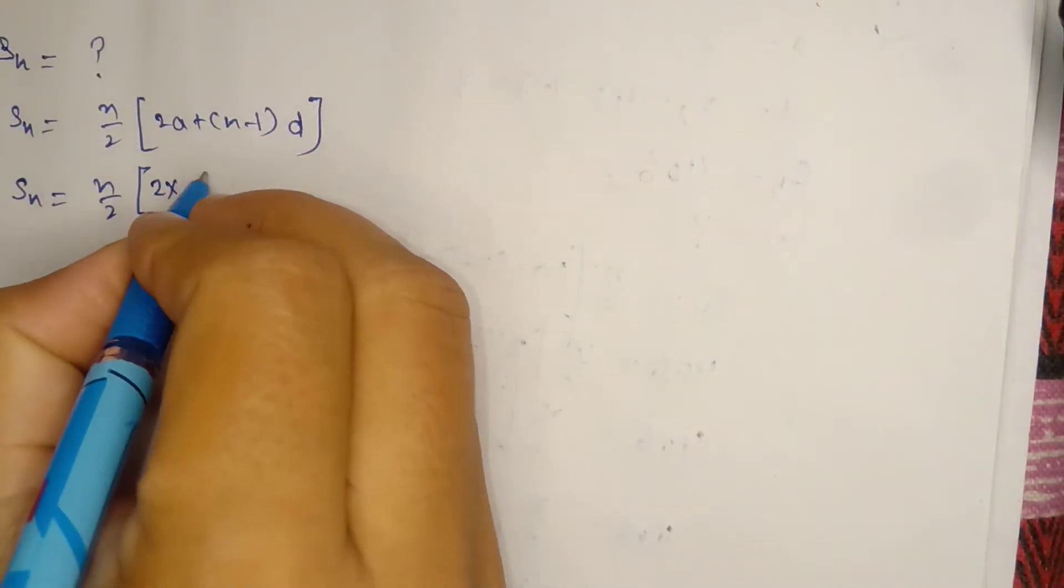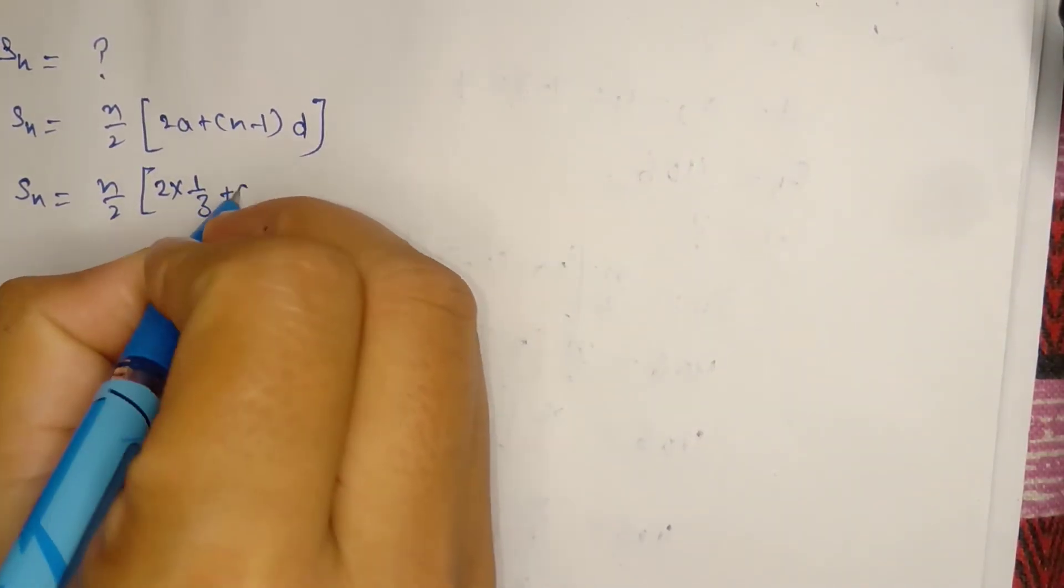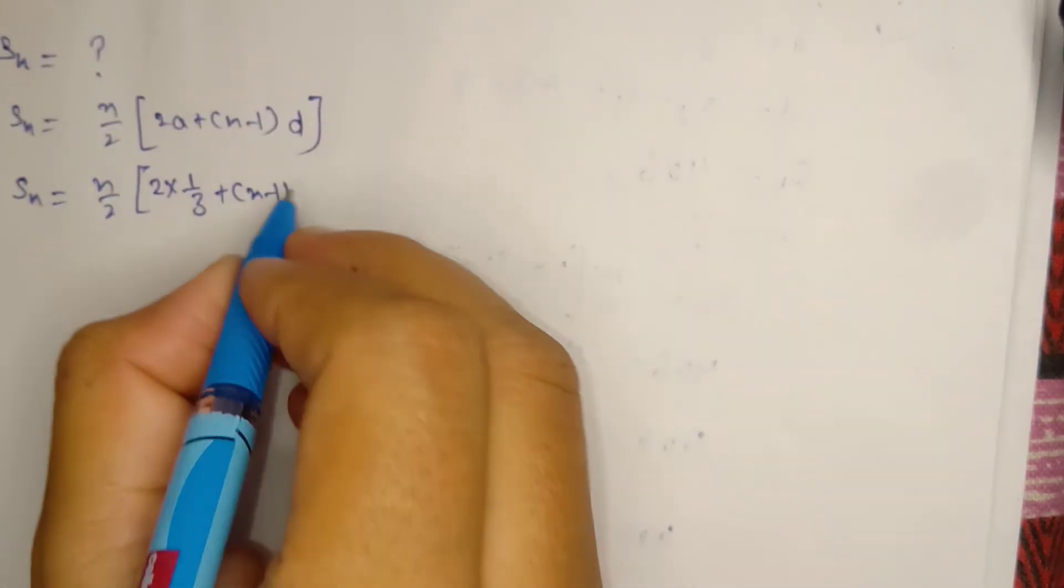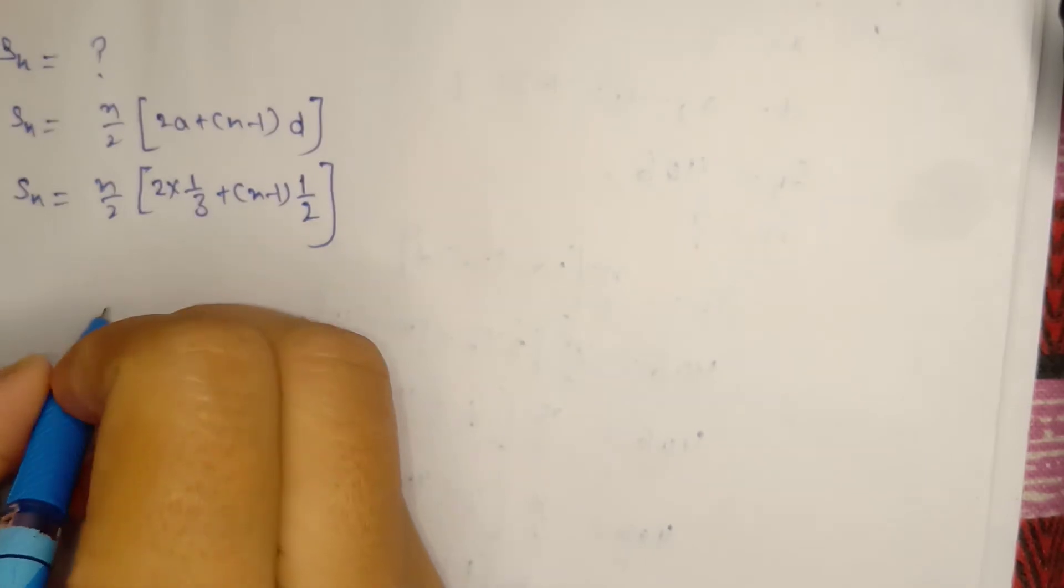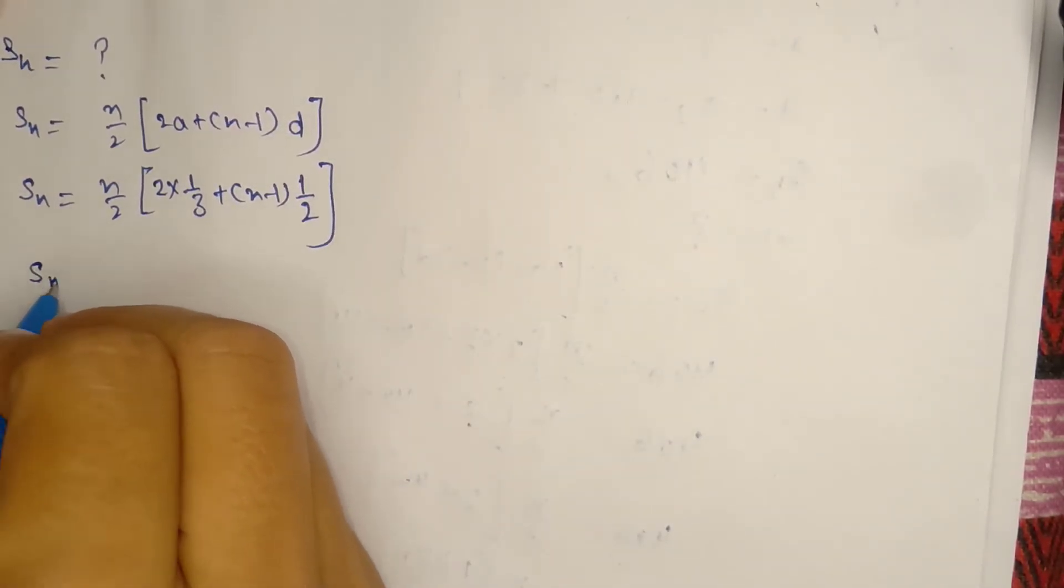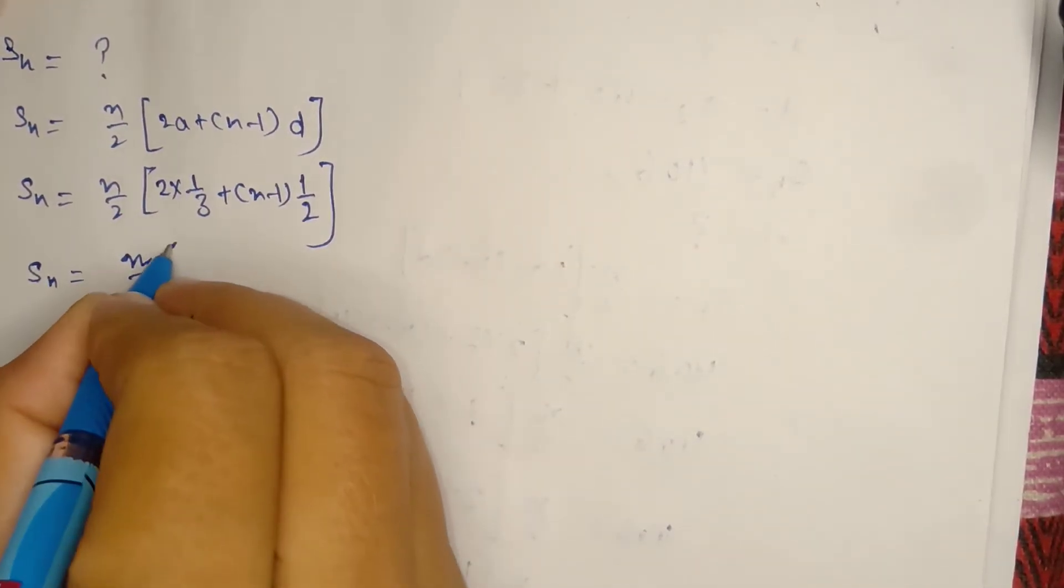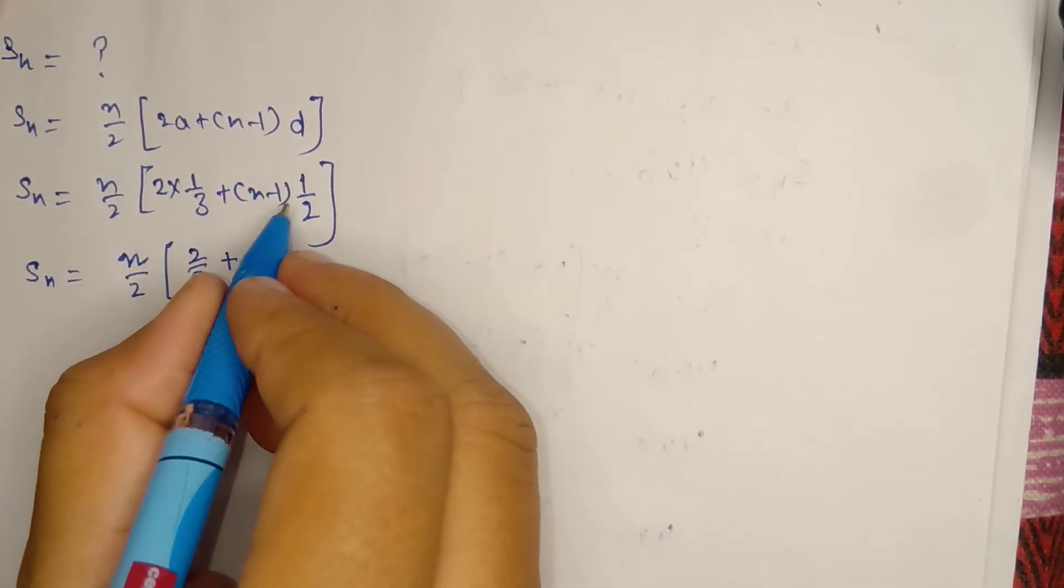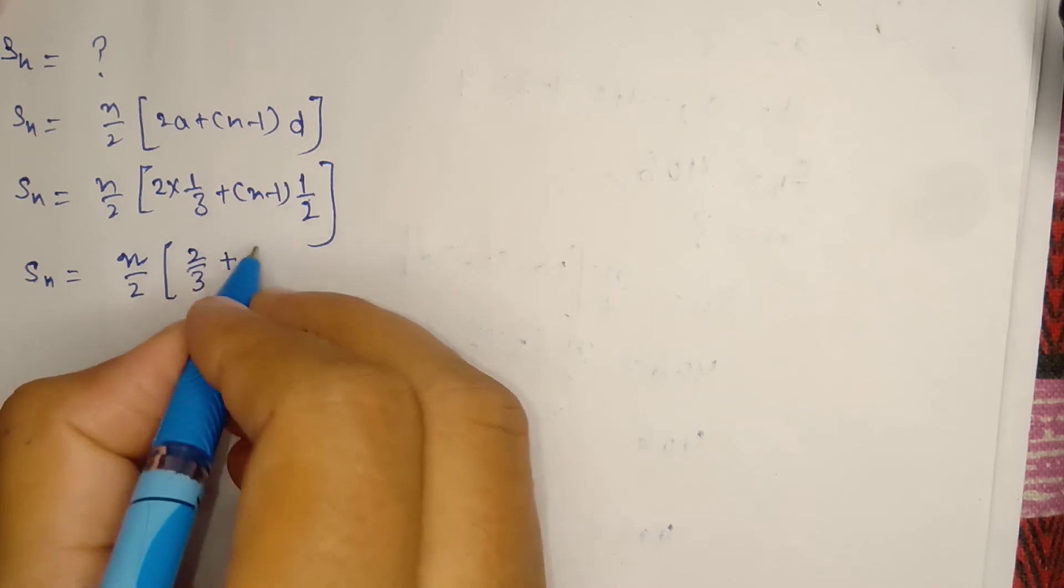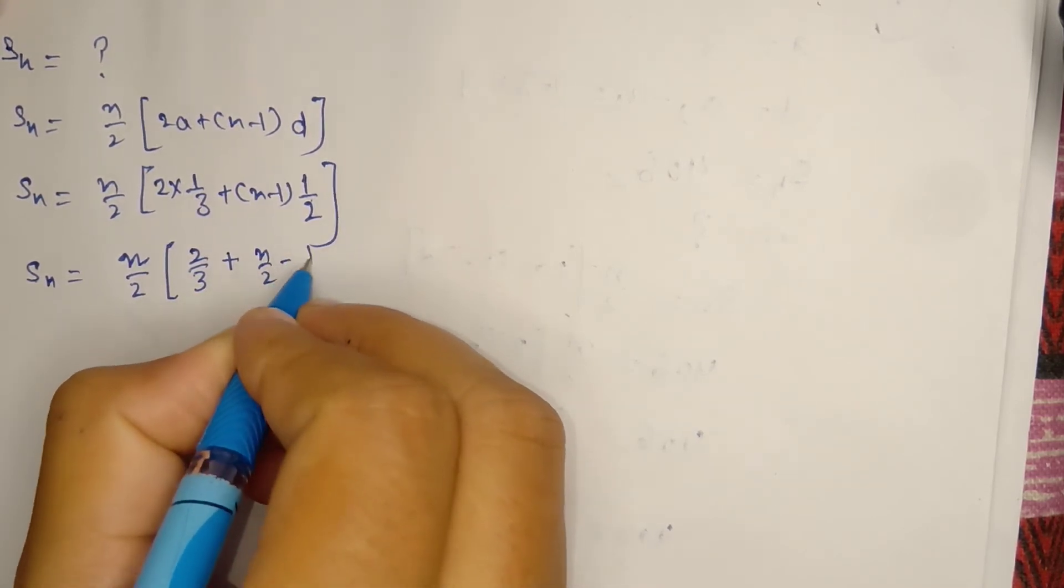The value of a is 1/3. The formula is Sn = n/2[2a + (n-1)d]. d was 1/2, so Sn = n/2[2(1/3) + (n-1)(1/2)] = n/2[2/3 + n/2 - 1/2].